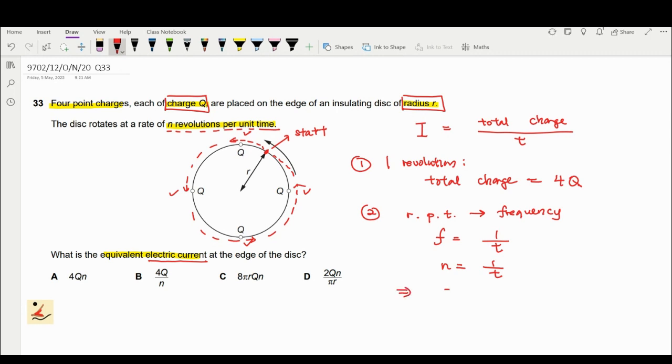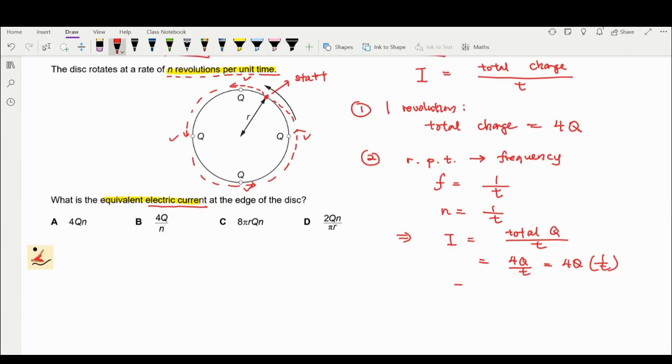Combining this information, I equals total charge over time. You have 4Q over T, which is 4Q times one over T. So the current for this question will be 4Qn. 4Qn will be the answer.